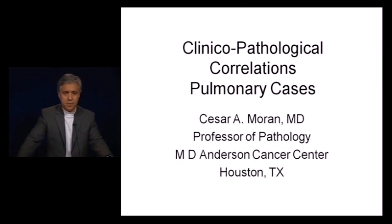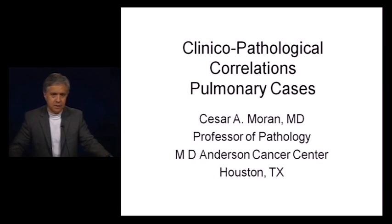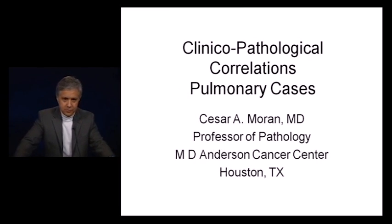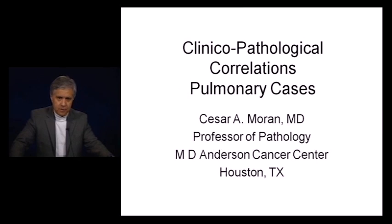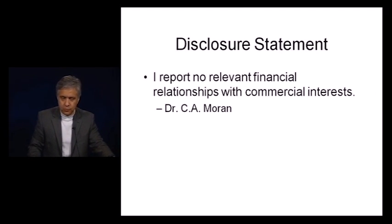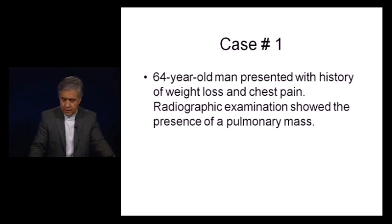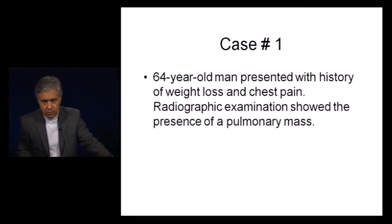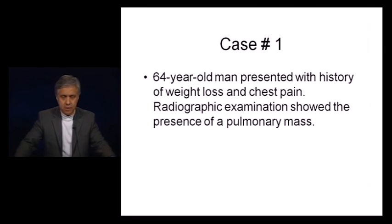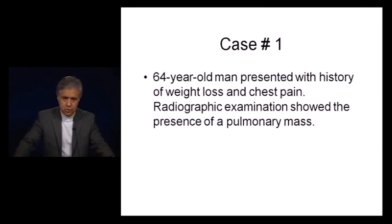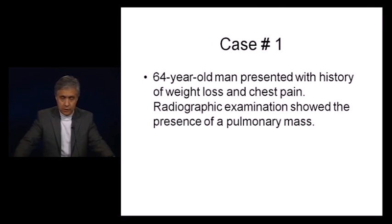This is Dr. Moran again. This time I have selected a group of pulmonary cases that we will discuss as clinical pathological correlations. I do not have any conflict of interest and nothing to disclose. The cases I have selected are rather unusual and challenging — some may be easily misdiagnosed, and some are conditions people may not be aware of as primary tumors or lesions in the lung.